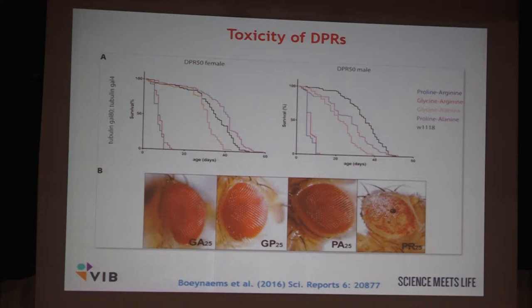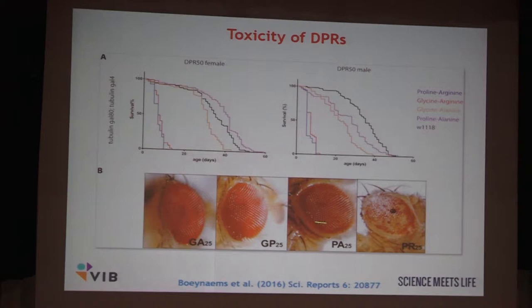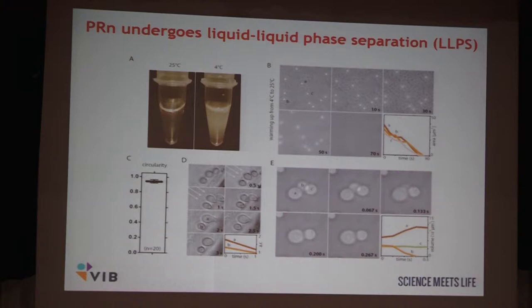My collaborators formally showed that the dipeptide repeats are very toxic. For example, in Drosophila, when the different DPRs were overexpressed, it was shown that the arginine-rich ones — proline-arginine and glycine-arginine at N of 20, 30, 50, or 100 — shorten the life expectancy of Drosophila significantly, both females and males. When the expression was directed in particular cell types such as the eyes, it was shown to be really very toxic. So the dipeptide repeats are very toxic — they kill cells and they can kill whole organisms.